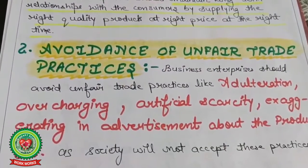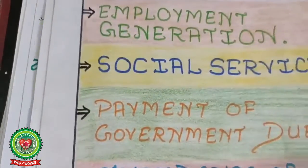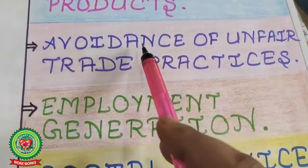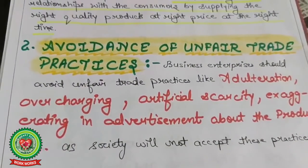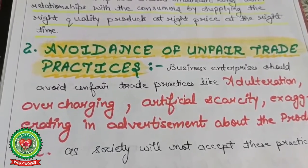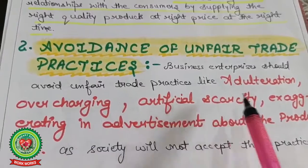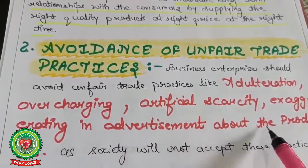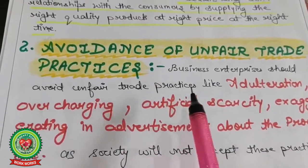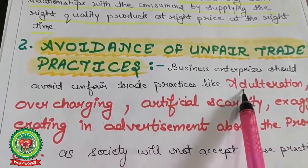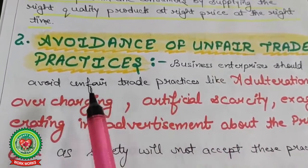The next point is avoidance of unfair trade practices. Business enterprise should avoid unfair trade practices like adulteration, overcharging, artificial scarcity, exaggerating in advertisement about products — society will not accept these practices. Adulteration means not receiving proper nutritious food; overcharging means the seller charges a higher price; artificial scarcity means hoarding.